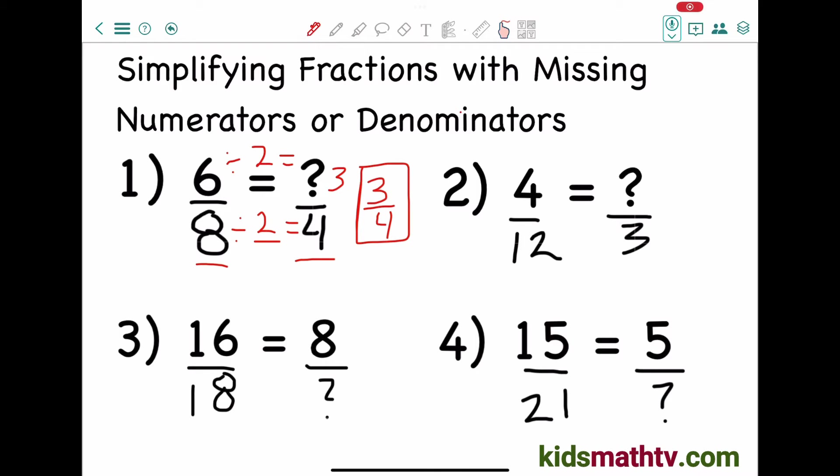For number 2 let's look at the denominator again. How do we get from 12 to 3? 12 divided by what equals 3? This should be 4. Let's divide the numerator by 4. So 4 divided by 4 is quite easy. This is 1. And if we put the fraction together it should be 1/3. And since the numerator is 1, nothing more can be simplified. So 1/3 is the final answer.